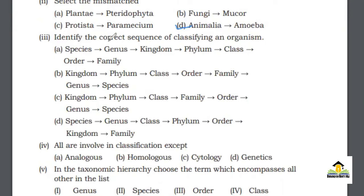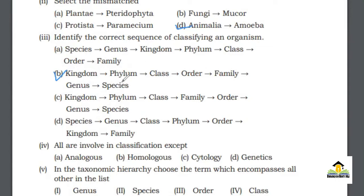MCQ number 3: Identify the correct sequence of classifying an organism. A. Species, Genus, Kingdom, Phylum, Class, Order, Family. B. Kingdom, Phylum, Class, Order, Family, Genus, Species. C. Kingdom, Phylum, Class, Family, Order, Genus, Species. D. Species, Genus, Class, Phylum, Order, Kingdom, Family. The right answer is B: Kingdom, Phylum, Class, Order, Family, Genus, and last, Species.